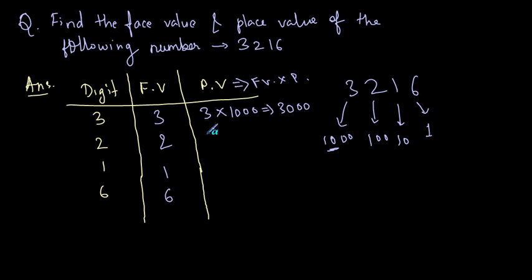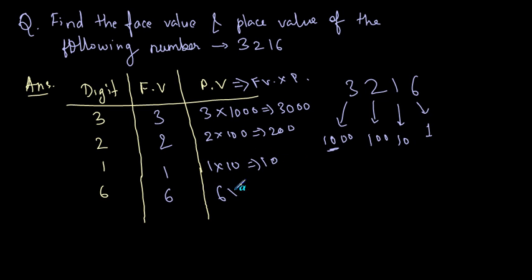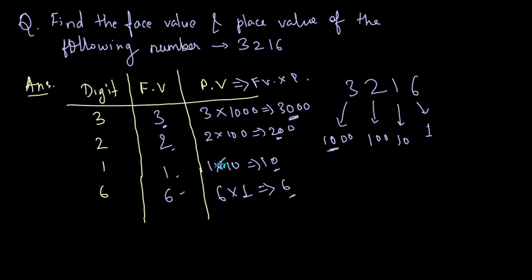The place value of 2 is 2 into 100, which equals 200. The place value of 1 is 1 into 10, which equals 10. The place value of 6 is 6 into its place, which is 1 (the units place), so the answer is 6. These are the place values, and the face values are simply the actual values of those digits.